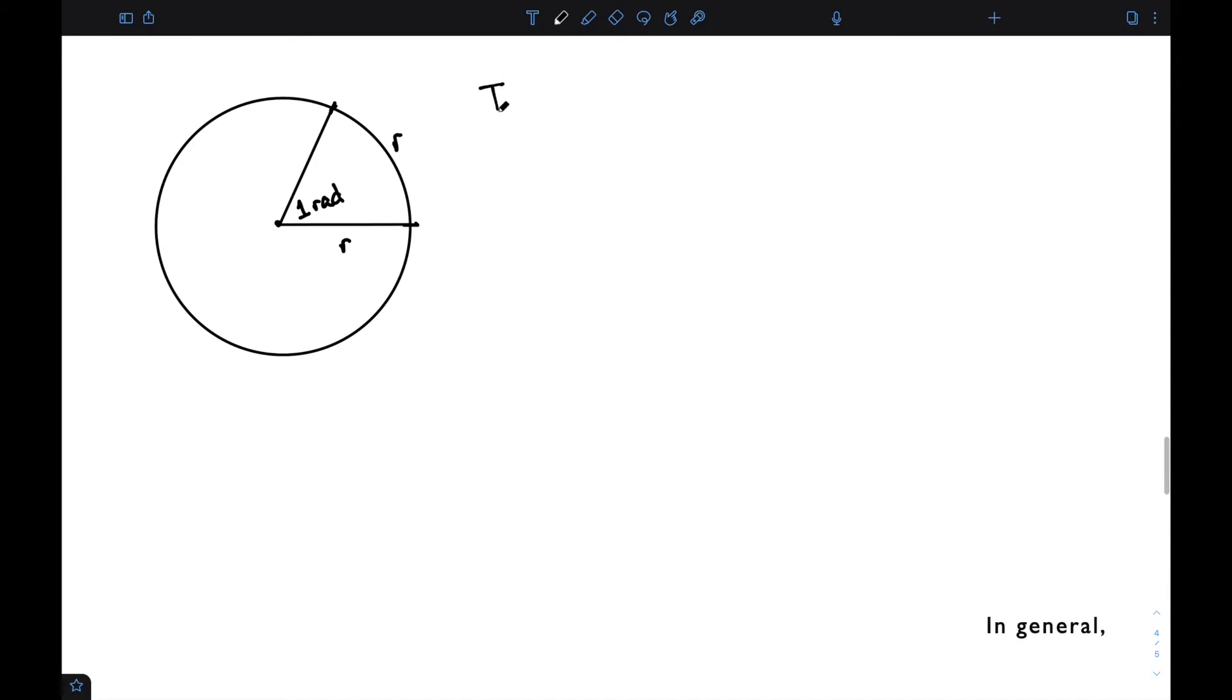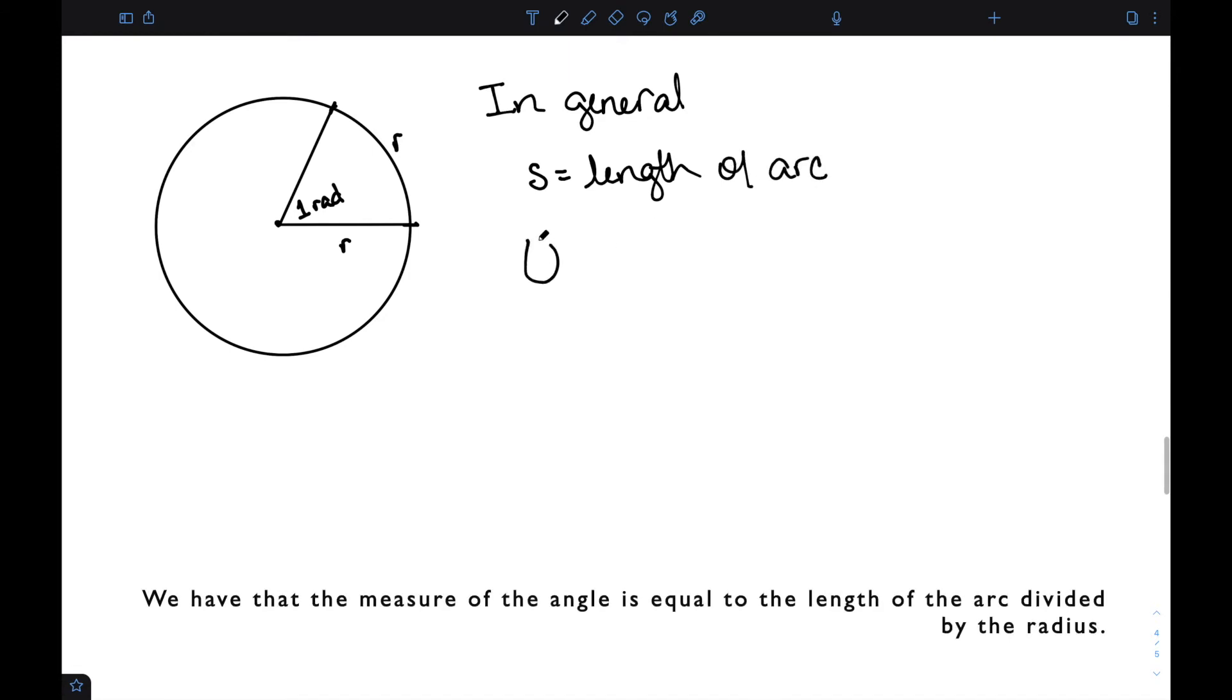And in general, if I let s be the length of the arc that's intercepted, we have that the measure of the angle is equal to the length of the arc divided by the radius.